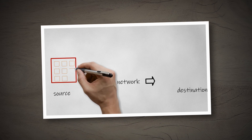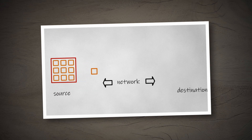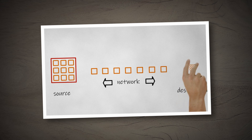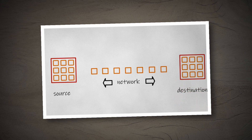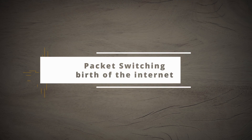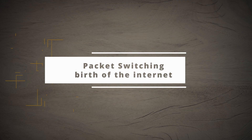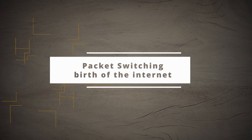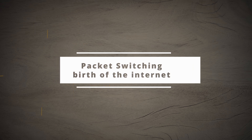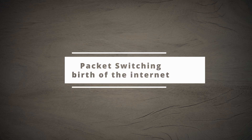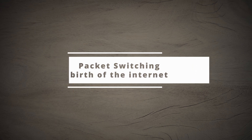A large portion of our modern communication systems run on the idea of dividing information into uniform blocks that travel the network and reassemble back into the original data upon reaching their destination. This concept is known as packet switching, and it came out of the need to build survivable networks.